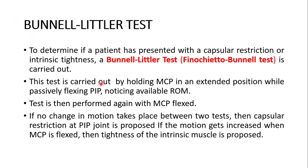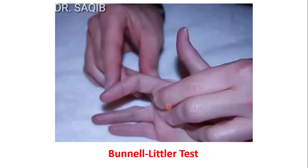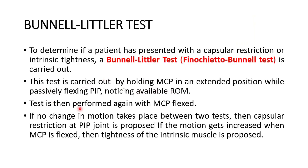The Bunnell-Littler test is used to determine if a patient presents with capsular restriction or intrinsic tightness. Also known as the intrinsic tightness test, it is carried out by holding the metacarpophalangeal joint in an extended position while passively flexing the proximal interphalangeal joint and noting the available range of motion. The test is then performed again with the metacarpophalangeal joint flexed. If no change in motion takes place between the two tests, capsular restriction at the proximal interphalangeal joint is proposed. If motion increases when the metacarpophalangeal joint is flexed, tightness of the intrinsic muscles is proposed.